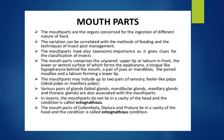In insects, the mouthparts do not lie in the cavity of the head; this condition is called ectognathus. Whereas the mouthparts of certain insects such as Collembola, Diplura, and Protura lie in the cavity of the head — those insects are known as entognathus. So mouthparts lying inside the cavity are called entognathous, and those not lying in the cavity are called ectognathous.